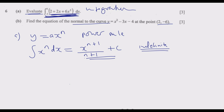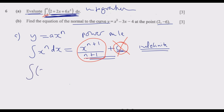If that is the case, you add the constant. But once we are given the interval within which we need to find the value, this constant cancels out because as we are finding the differences it drops out. So in this case we just need to use this principle. What we have in the bracket is 2 plus 2x plus 6x squared, with respect to x, over the interval negative 1 to 4.